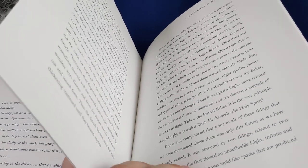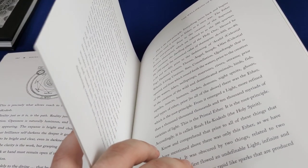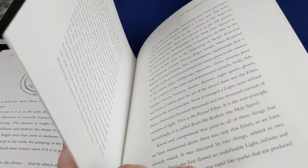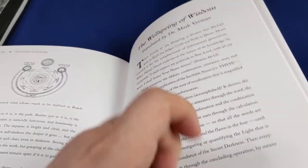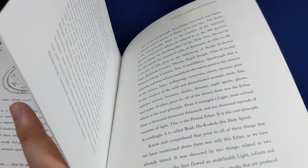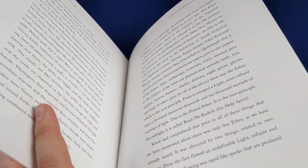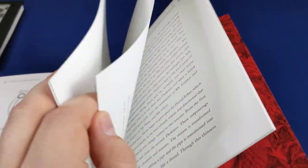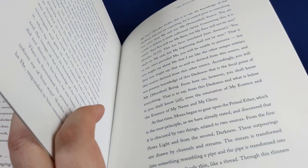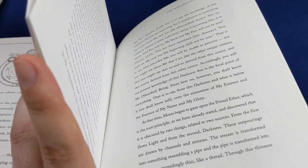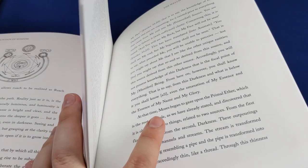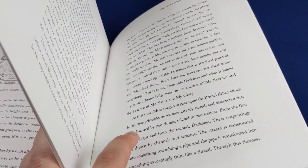What he's done is that he's made the book approachable. The structure of the book is that he's actually started with a passage from the middle of the book. It starts right there. At that time Moses began to gaze upon the primal ether.